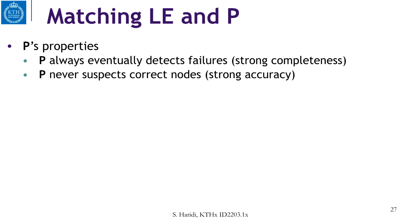Let us now compare the perfect leader election, LE, with the perfect failure detector. What are the properties of P? P always detects failures eventually, which is strong completeness. And P never suspects correct nodes or processes, and that is strong accuracy.